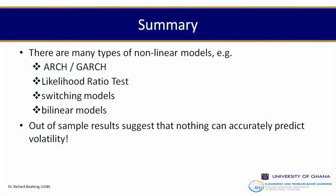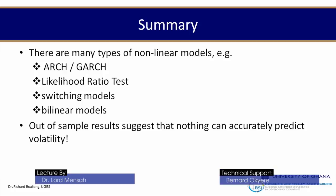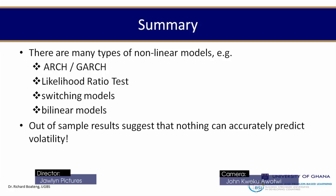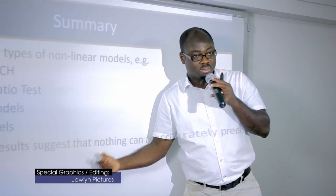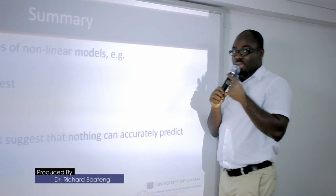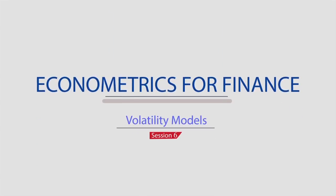In summary, there are many types of nonlinear models: ARCH and GARCH, likelihood ratio tests, switching and bilinear models (to be covered in the next lecture series). Out-of-sample results suggest that nothing can accurately predict volatility, so we have to be careful. Thank you very much for your time.